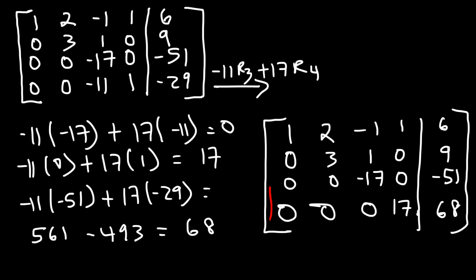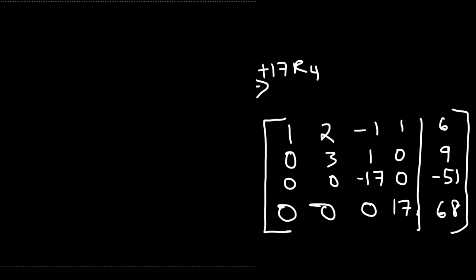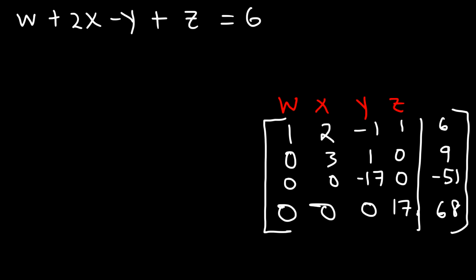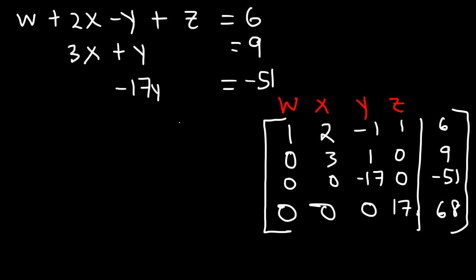We now have the zeros we wanted. We can convert back into a system of equations. The equations are: w plus 2x minus y plus z equals 6; 3x plus y equals 9; negative 17y equals negative 51; and 17z equals 68. We have everything we need to calculate x, y, and z.